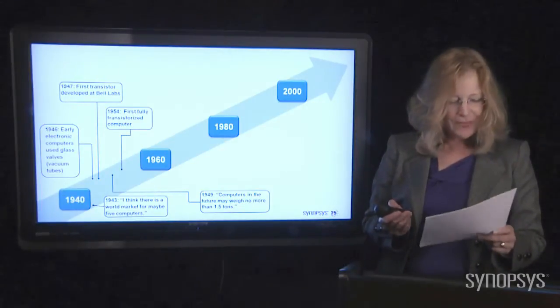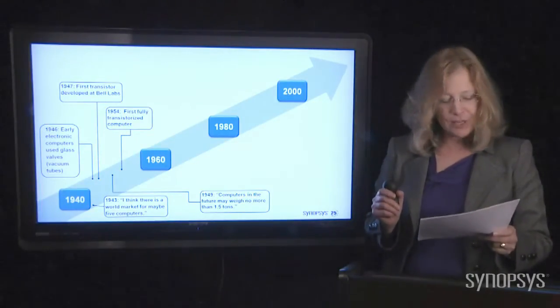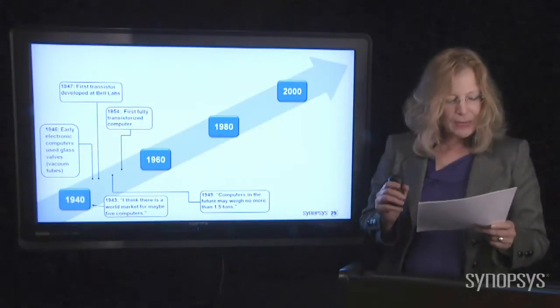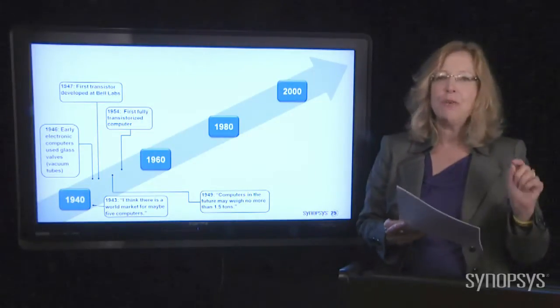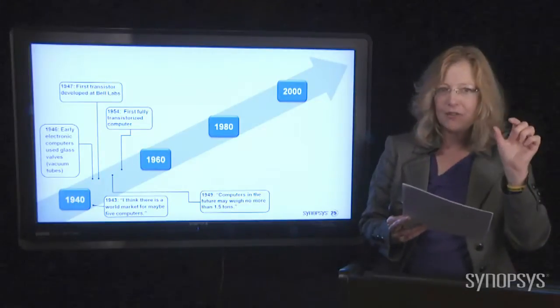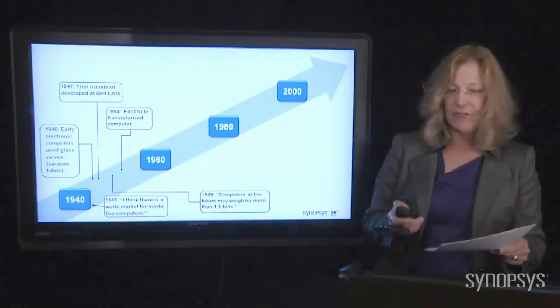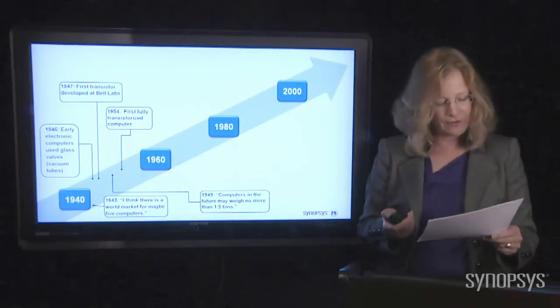In 1954, the first fully transistorized computer was invented. It was developed by IBM and it had 2,000 separate transistors. Now keep that in mind, 2,000 transistors back in 1954 because now you're going to see how we've progressed over these years.